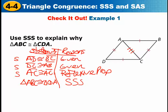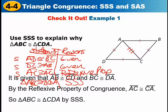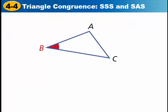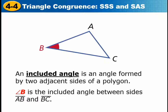An included angle is an angle formed by two adjacent sides of a polygon. Angle B is the included angle between sides AB and BC because it is touching both sides — this angle touches this side and this side. So it's called the included angle.